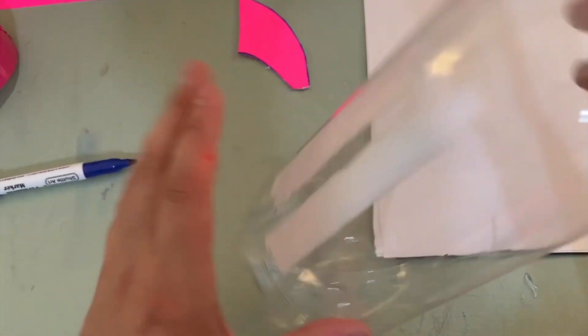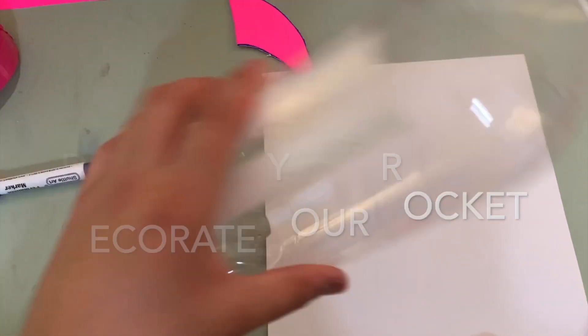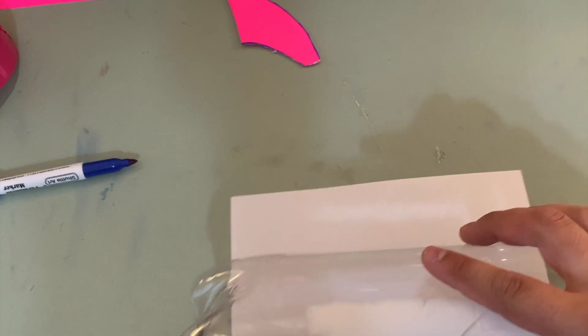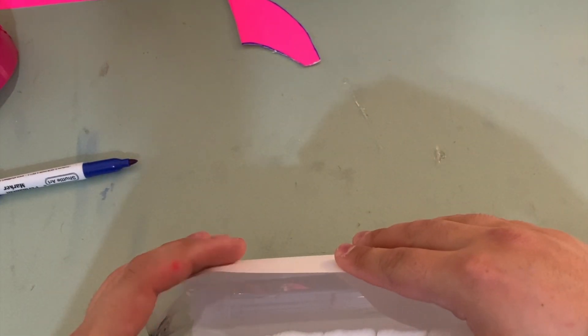Alright, we're going to go ahead and do a tiny bit of decoration. So choose someone in your group who is a good artist. Okay, take a piece of paper. Wrap your rocket in that piece of paper.